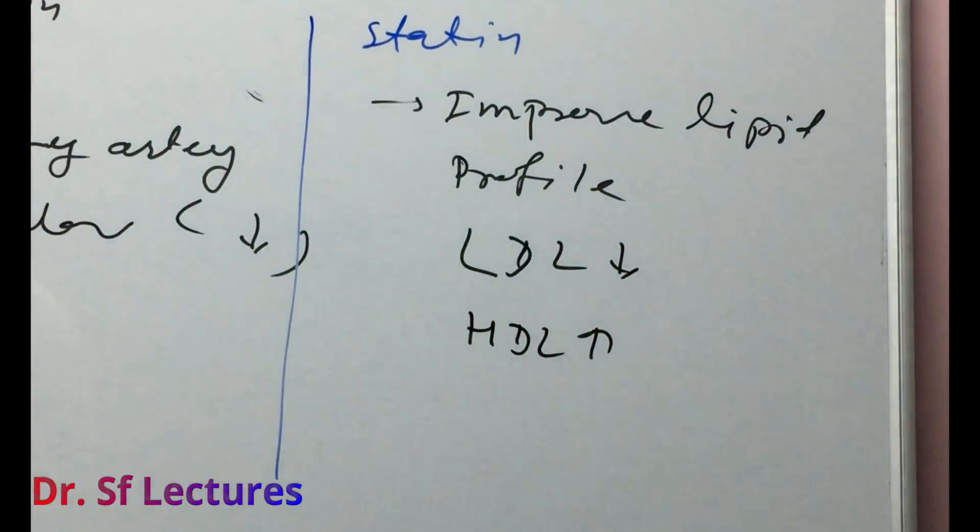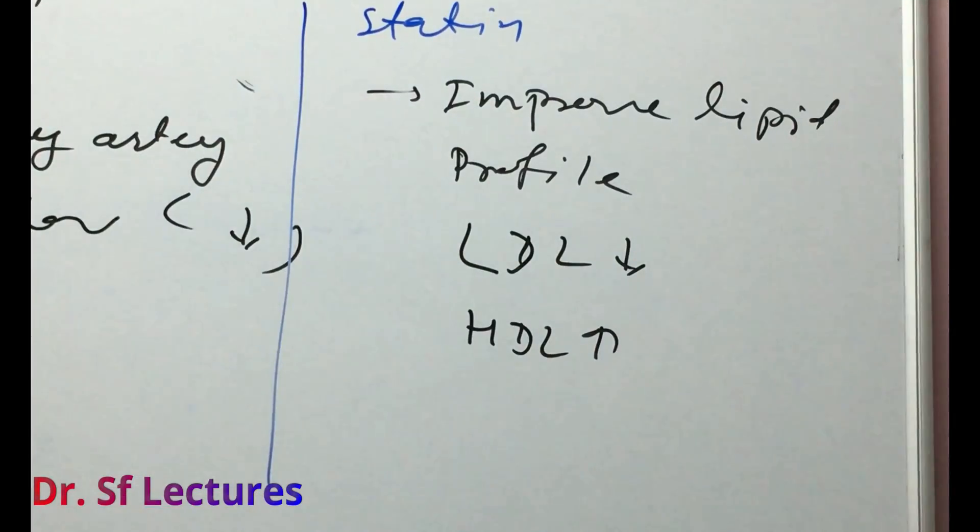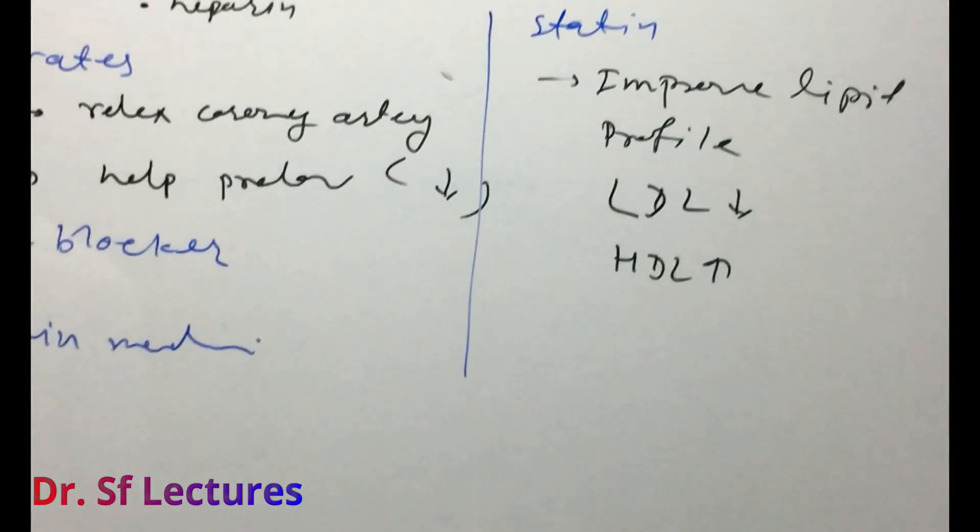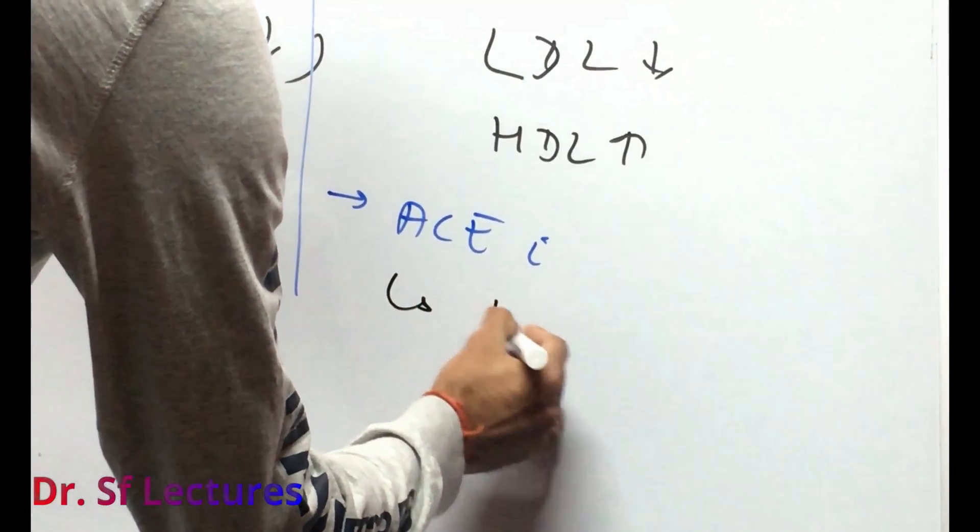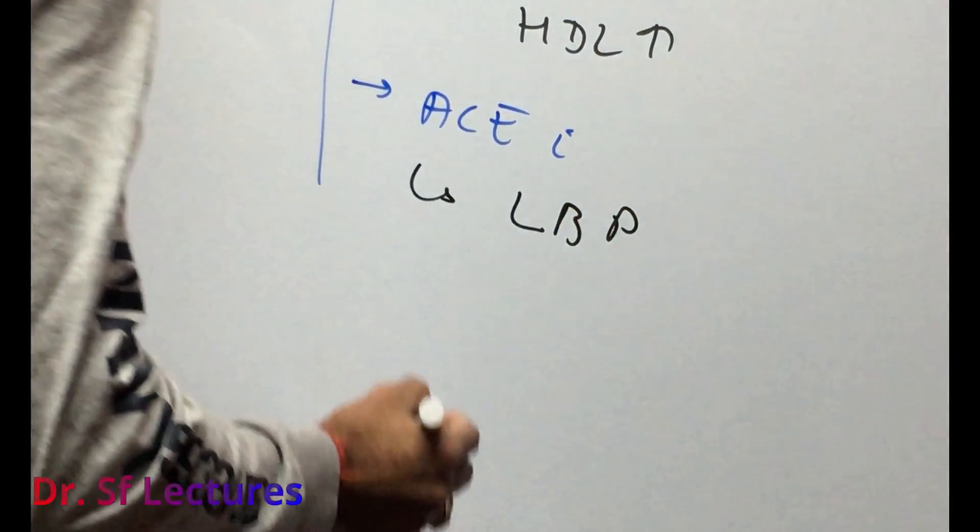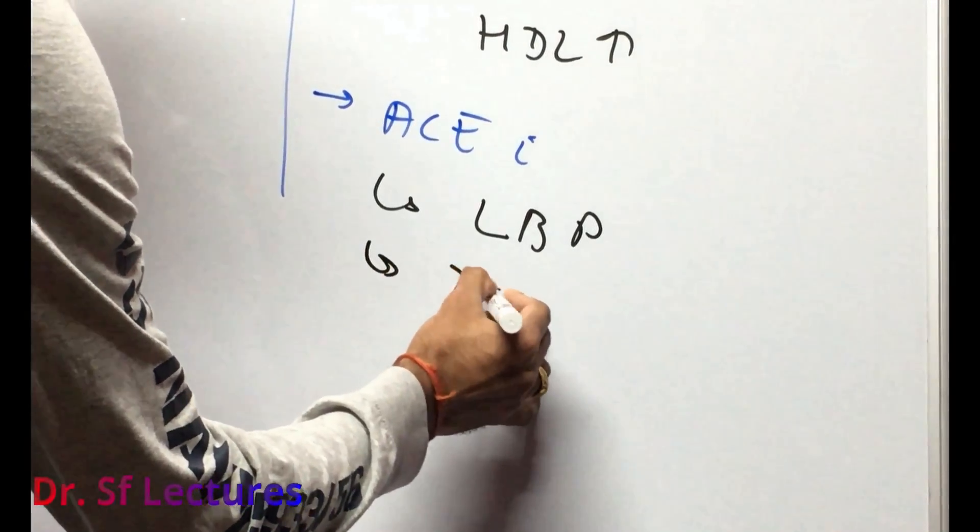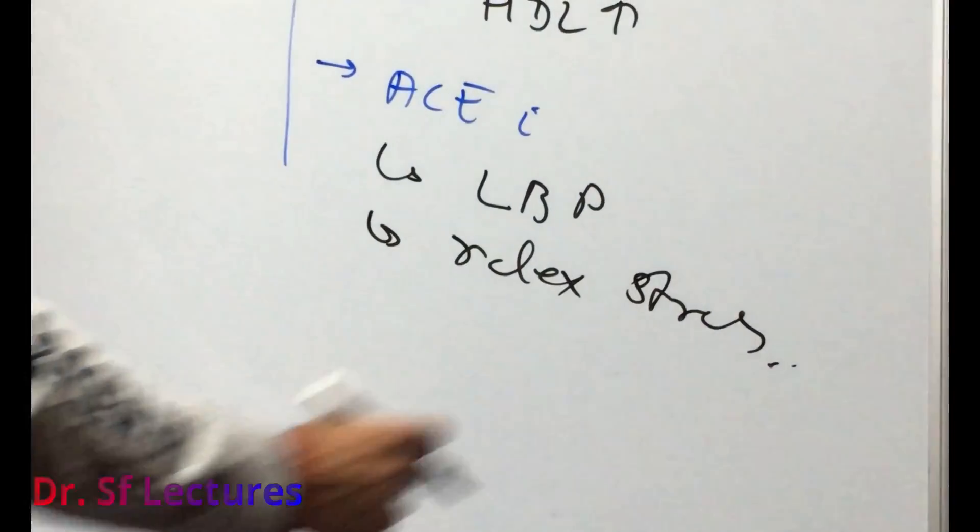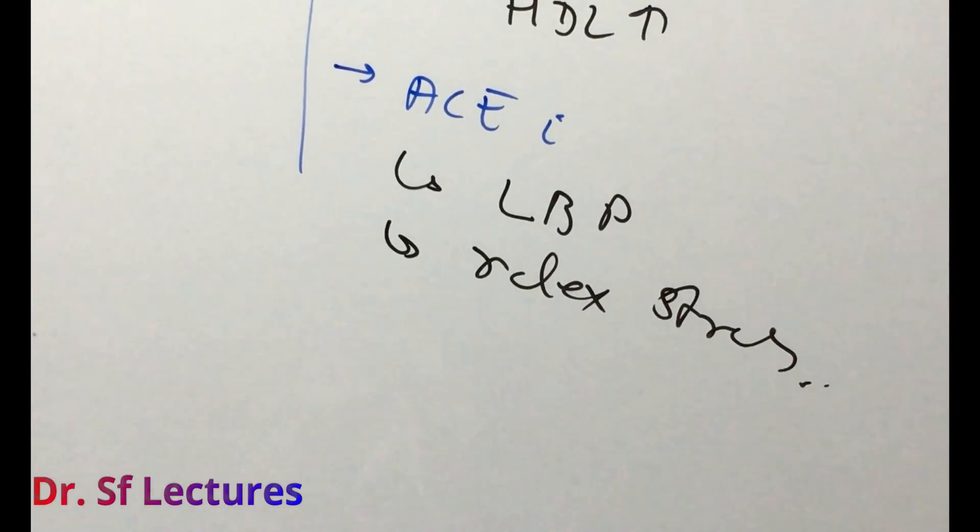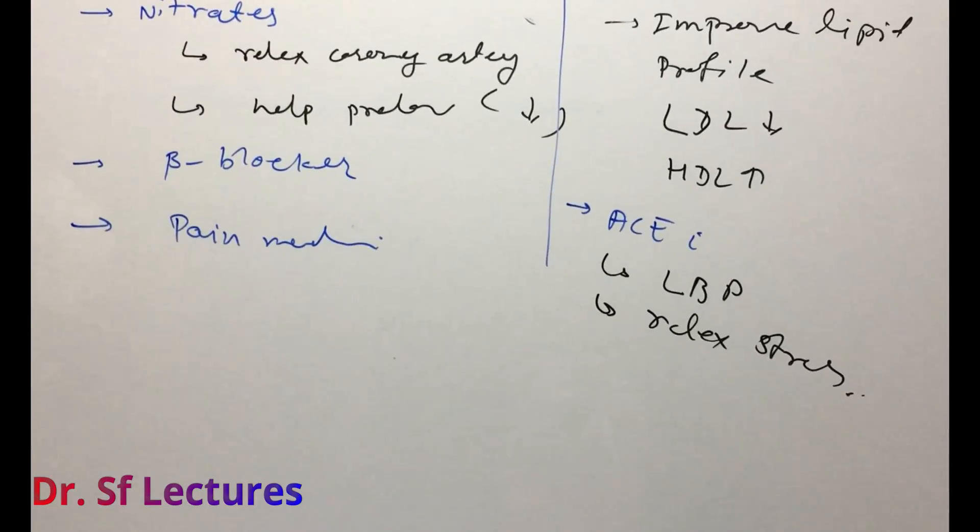In lipid profile, LDL will be decreased and HDL will be increased. LDL is bad for health and HDL is good for health. Other drugs we can use like ACE inhibitors for lowering blood pressure and to relax the stress in the heart.